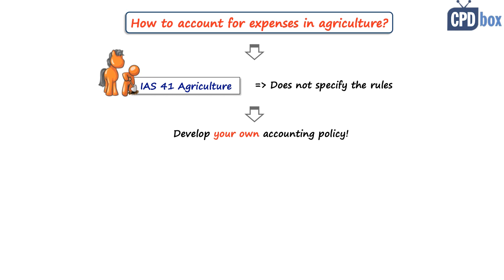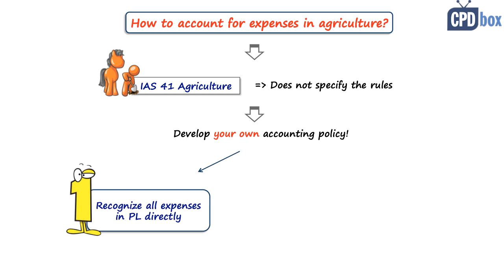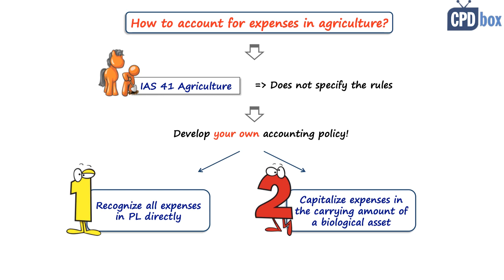Basically you have two options. Option one: put all subsequent expenditure in profit or loss directly. Option two: capitalize the subsequent expenditure in the carrying amount of your biological assets.